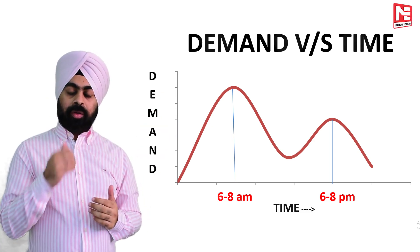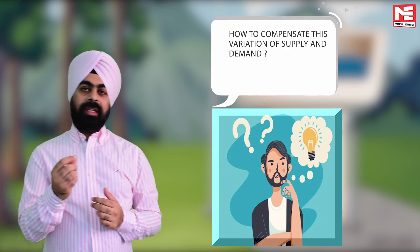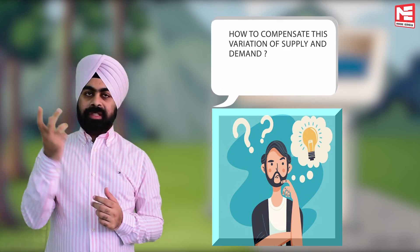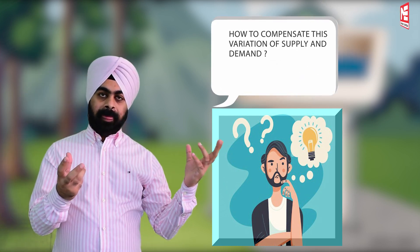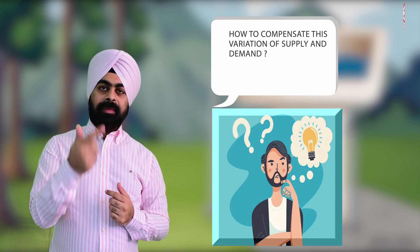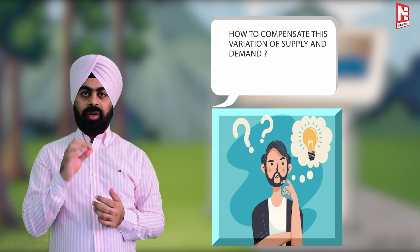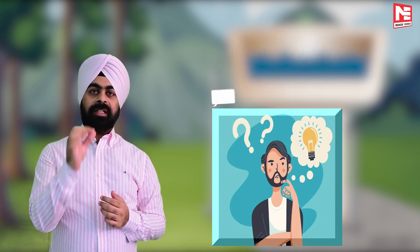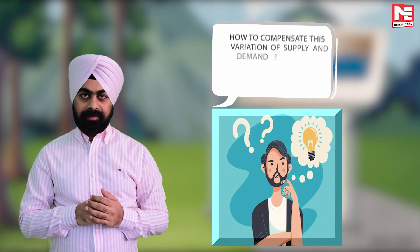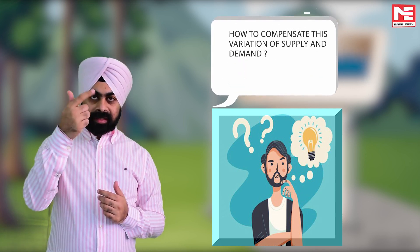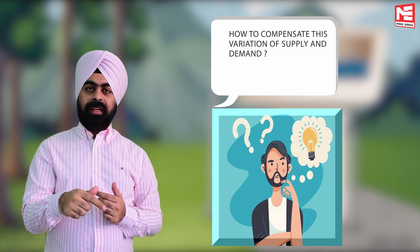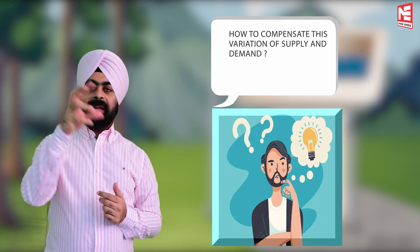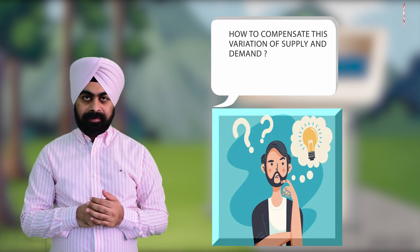Now the point is: where is the problem? The problem is that supply is constant but demand is variable. So when demand is more than supply, we are not able to meet this excess demand, and when demand becomes less than the supply, the additional supply of water will get wasted out.